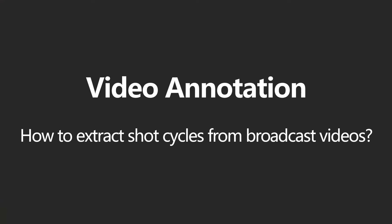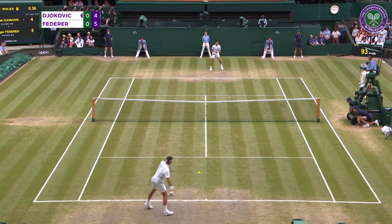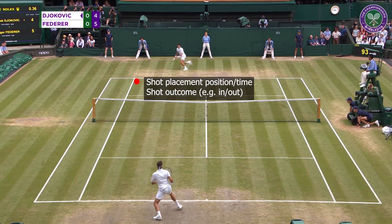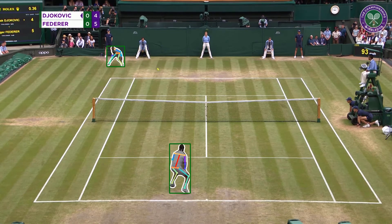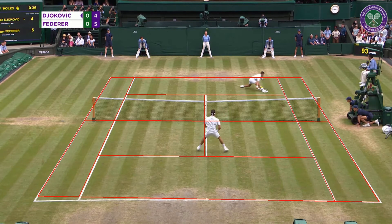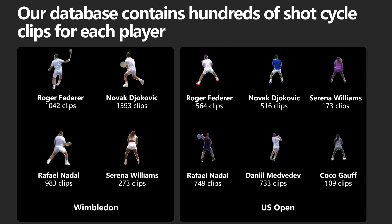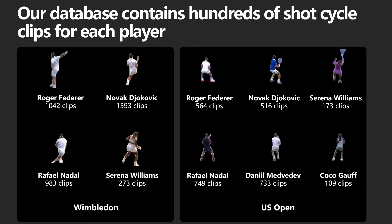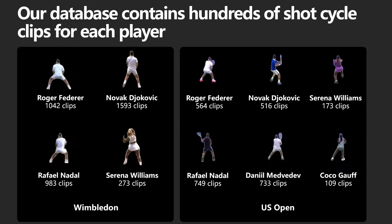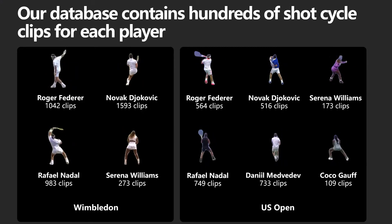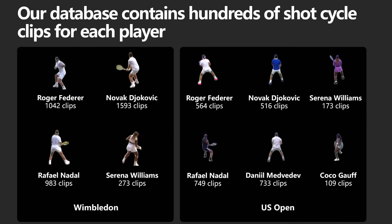To extract shot cycle structure from broadcast videos, we combine human and machine annotations to label both shot-level information and per-frame player detections. We use human annotation to identify precisely when and where shots occur, the types of shots such as forehand or backhand, topspin or slice, as well as the shot outcome. We use automatic techniques to extract per-frame player positions, segmentations, pose keypoints, and estimate broadcast camera extrinsics from court-line detections. This creates a database of shot cycle clips for four male players and two female players in both Wimbledon and US Open, where each player has at most a few hundred clips. At annotation time, it took about one human hour to annotate one hour of broadcast footage, though this could be significantly reduced with more advanced video analysis tools.